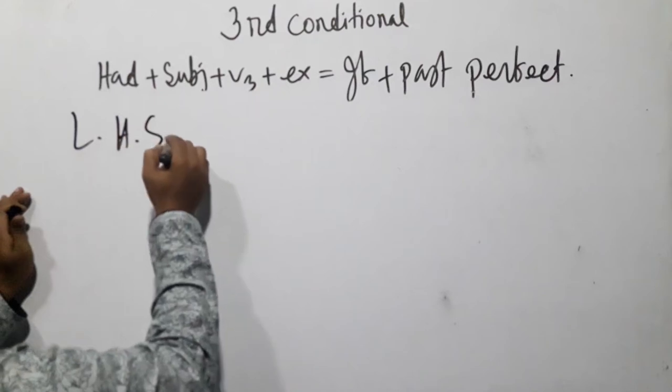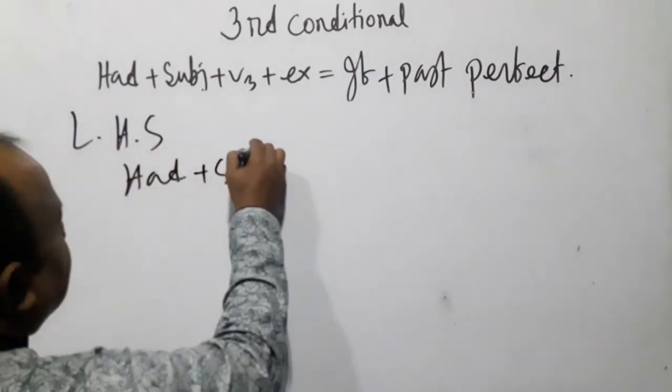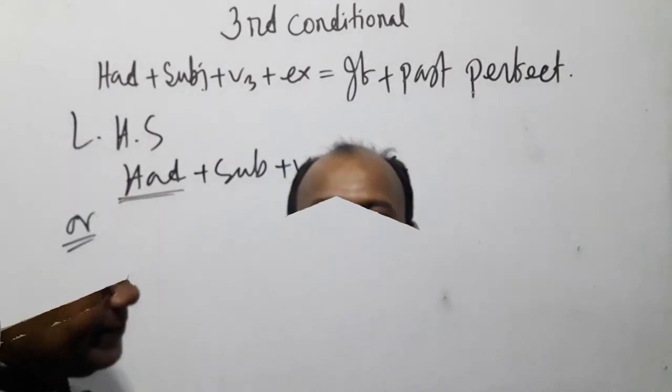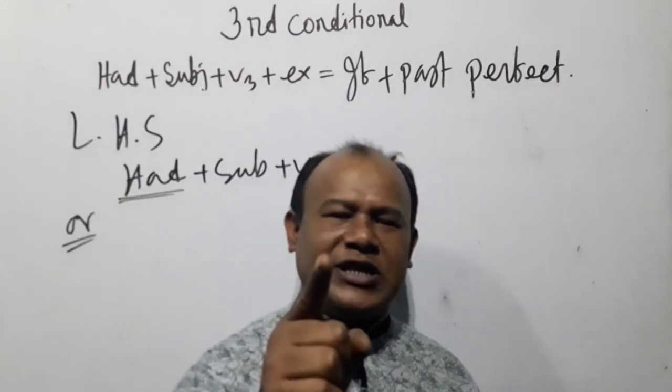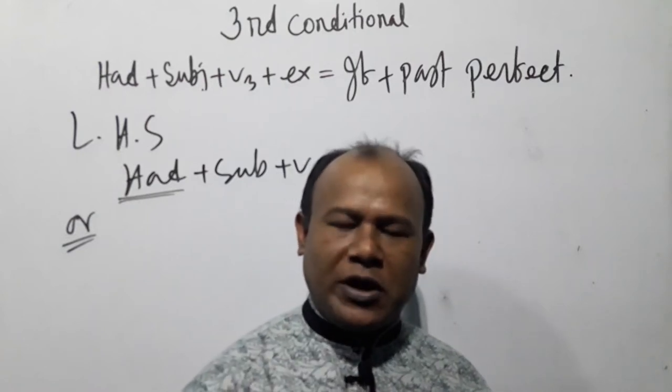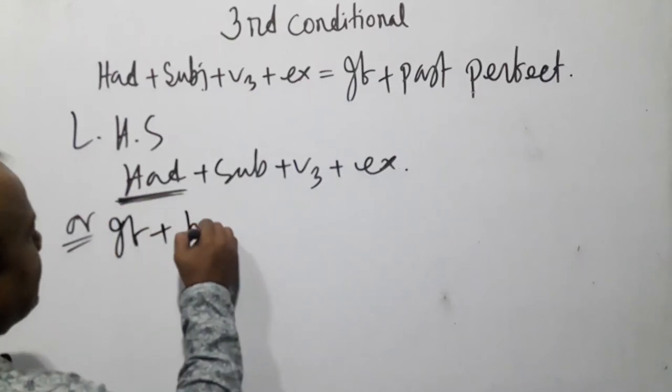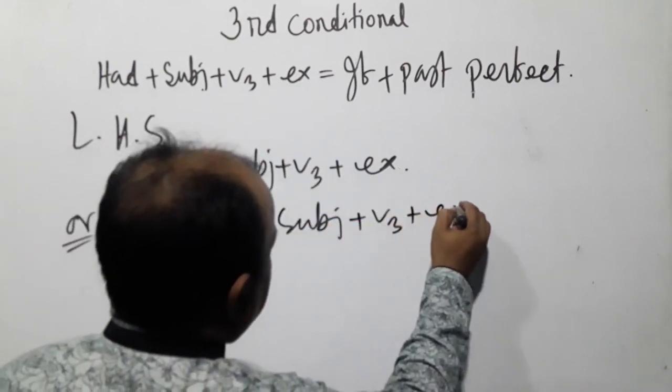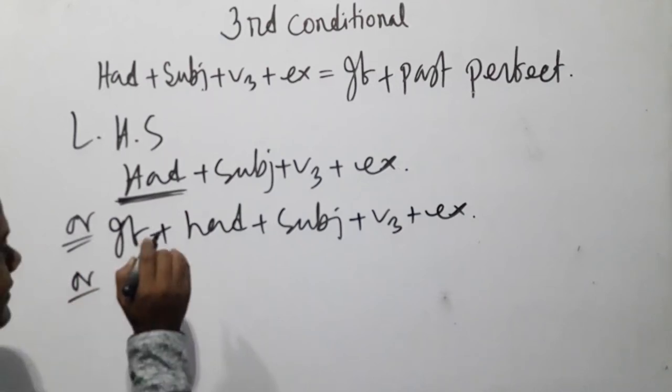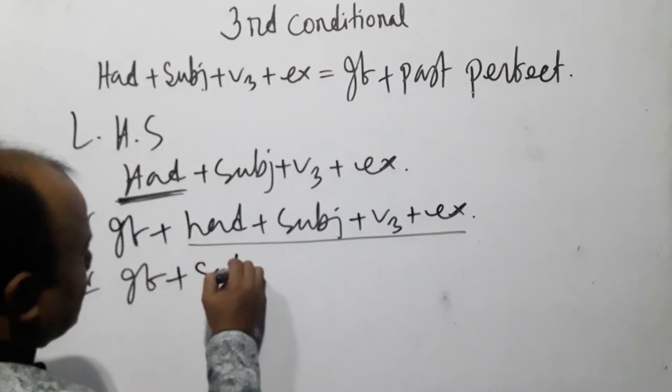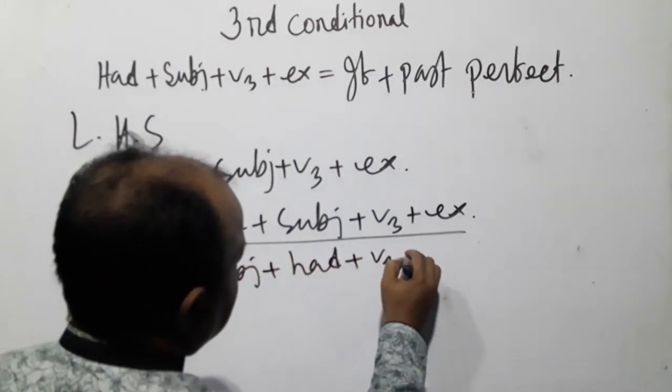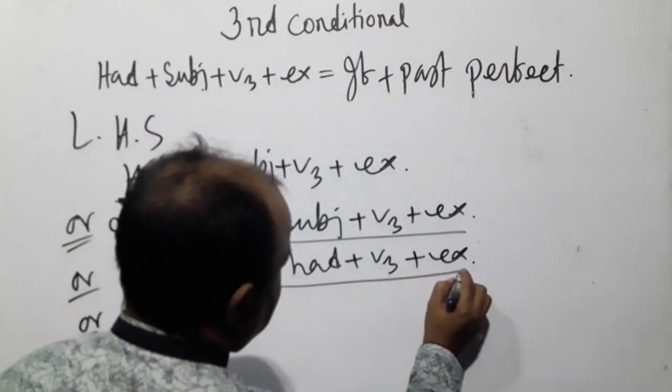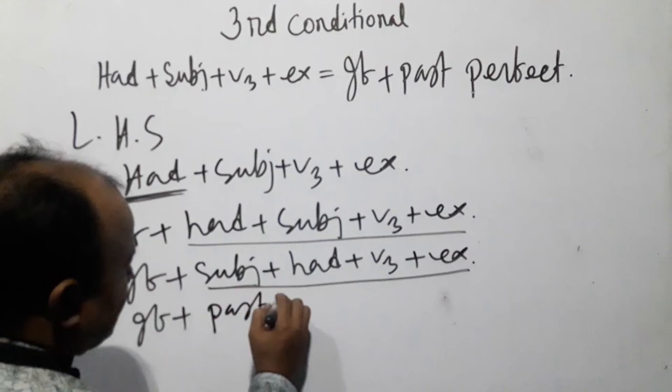Left-hand side: had + subject + v3 + extension. Or 'if + had + subject + v3 + extension,' or 'if + subject + had + v3 + extension,' or 'if + subject + had + v3.' The content has gotten past perfect, past perfect.